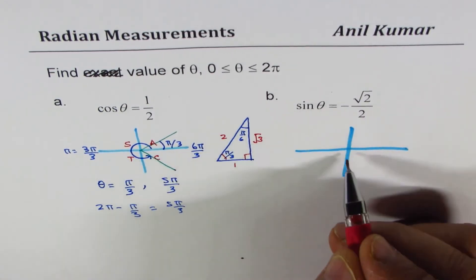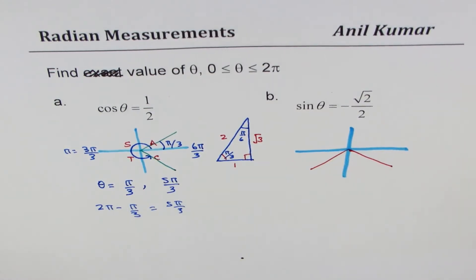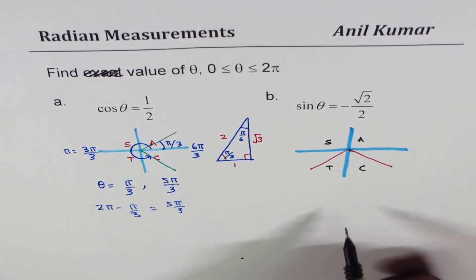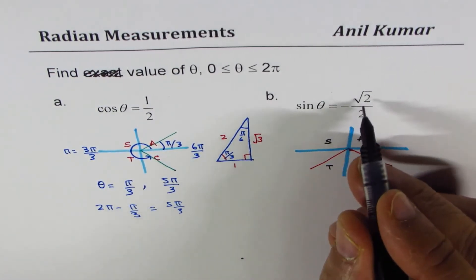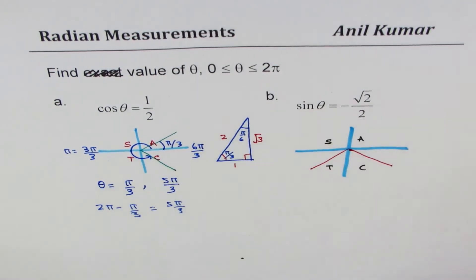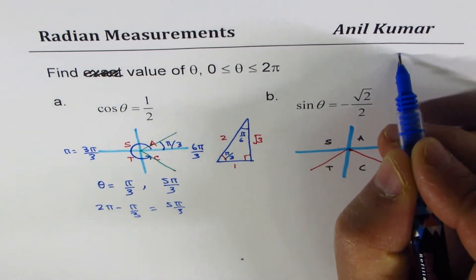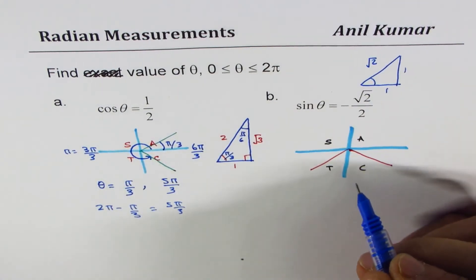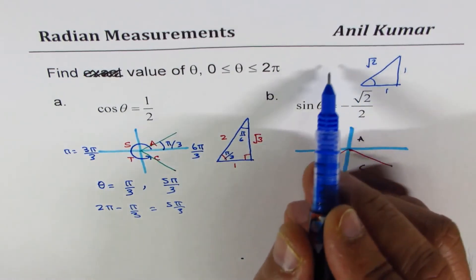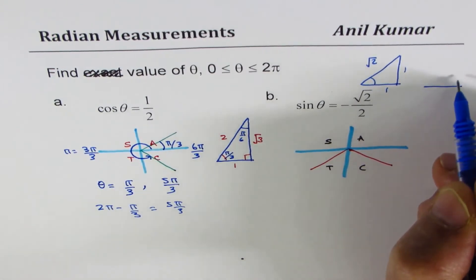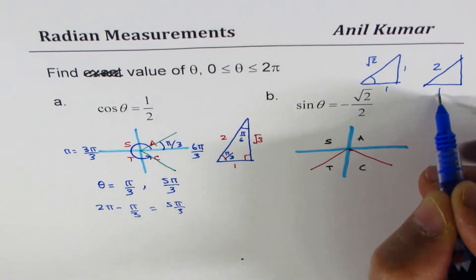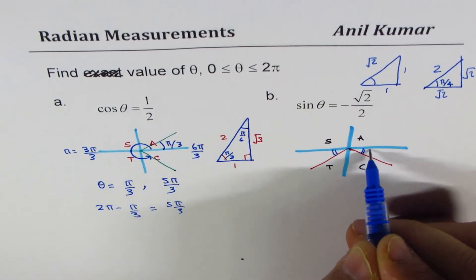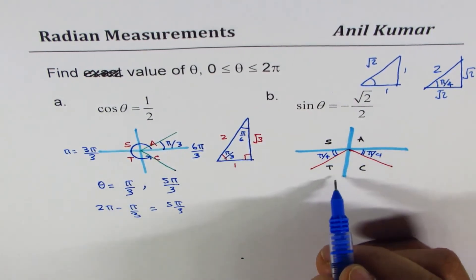For the next example, negative sine means the terminal arm can be in two places. Since all are positive in quadrant 1, sine in quadrant 2, tan in quadrant 3, and cosine in quadrant 4, there are two possible solutions. The acute angle that gives √2/2 is π/4, the 45-degree special triangle with sides 1, 1, √2.